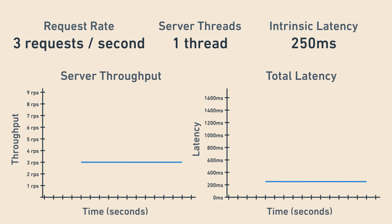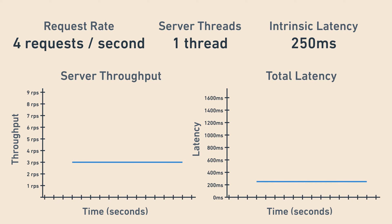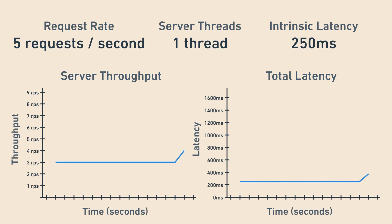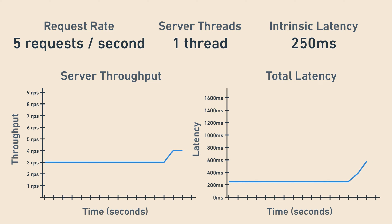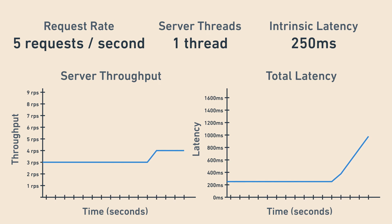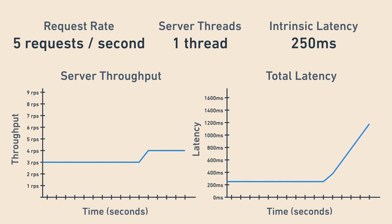Now let's crank up the incoming request rate to five requests per second. First, throughput increases from three to four — but not to five — because four is the maximum throughput. Secondly, because five requests are coming in per second but the server can only handle four of them, latency starts to increase because the server is falling behind, and queuing latency increases.